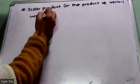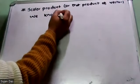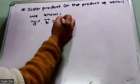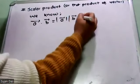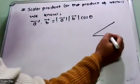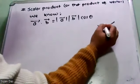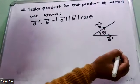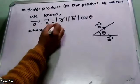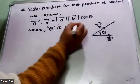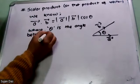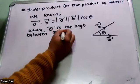We know vector A dot vector B equals the magnitude of vector A times the magnitude of vector B times cosine theta, where theta is the angle between vector A and vector B.